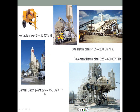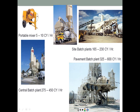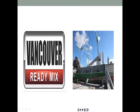Here we can see a central batch plant that can produce anywhere between 275 and 450 cubic yards per hour — a huge production rate. This is a portable drum mixer where you pour cement, sand, and gravel, add water, and it mixes the concrete with a capacity of 5 to 10 cubic yards per hour — relatively small but mobile. Side batch plants can produce 165 to 230 cubic yards per hour, using silos and belt conveyors to transport materials. A pavement batch plant can produce up to 600 cubic yards per hour.